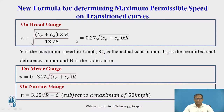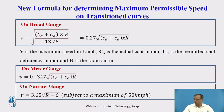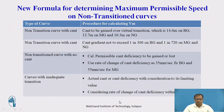For the meter gauge, V equals 0.347 times the square root of (CA plus CD) times R. For the narrow gauge, V equals 3.65 times the square root of (R minus 6), subjected to a maximum of 50 kmph.